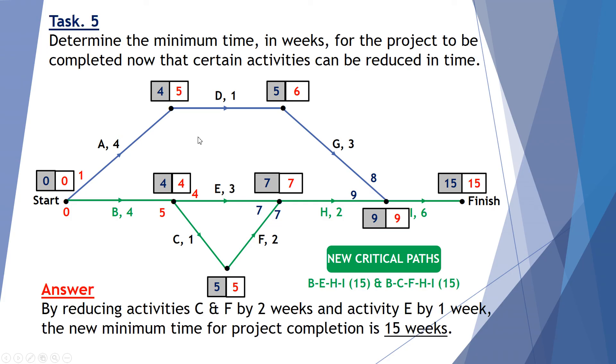Now finally, determine the minimum time in weeks for the project to be completed now that certain activities can be reduced in time. Again, just completing this by reducing the activity C and F by 2 weeks and activity E by 1 week. The new minimum project time completion is 15 weeks.